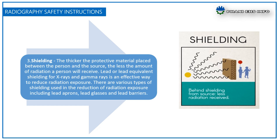There are various types of shielding used in the reduction of radiation exposure, including lead aprons, lead glasses, lead barriers, etc. When working in radiation areas it is important to use shielding whenever possible, which means being behind the shielding from the source means less radiation will be received.